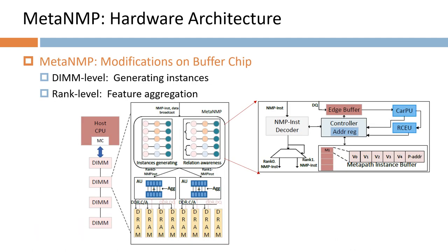Further, we develop near-memory architecture in MetNNP to overcome memory bottlenecks. We exploit bank-and-row-level paradigms in DRAM memory systems, with specialized hardware units at the bank level to implement Cartesian-like products for generating metapath instances. We also integrate processing units at the row level to aggregate vertex features.